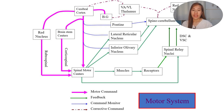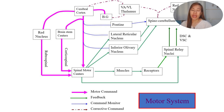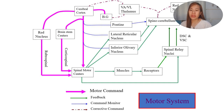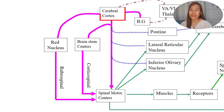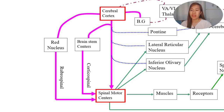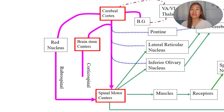On first look at this diagram it feels overwhelming - there are a lot of lines: a pink line, a blue dotted line, a green line, and a red line. The pink solid line represents the motor command. You can see the motor command coming from the cerebral cortex, with a pink solid line going to the spinal motor center - a direct motor command from the cortex to the spinal cord. There are also other lines: a pink line going first to the brainstem centers and then from the brainstem to the spinal cord, signifying another form of motor command.